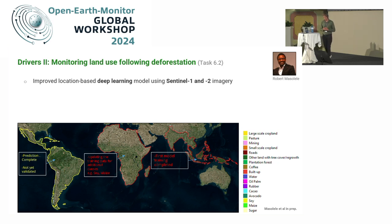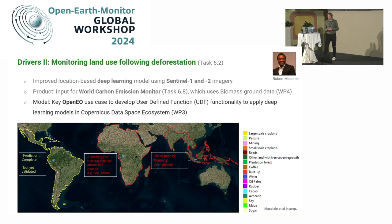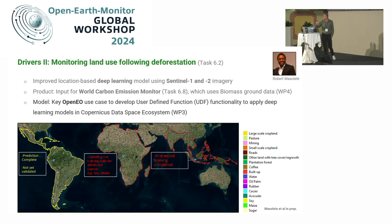We have started mapping the pan-tropics: South America is finished, we are now reprocessing Africa and Southeast Asia. Robert added additional classes like maize, soy, and sugar. Within this project, we are using this dataset as input for the World Carbon Emission Monitor, where we also use ground data and biomass data from another work package to derive emission factors. The deep learning model is also a key OpenEO use case in work package 3, where user-defined function functionality is being advanced to run a deep learning model on the Copernicus Data Space Ecosystem.